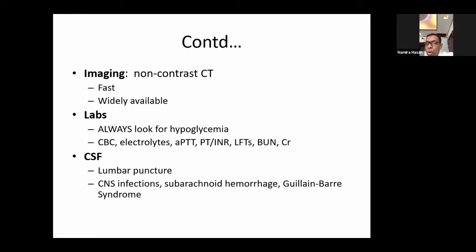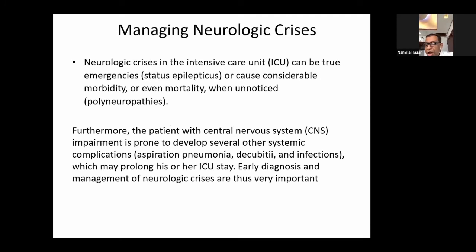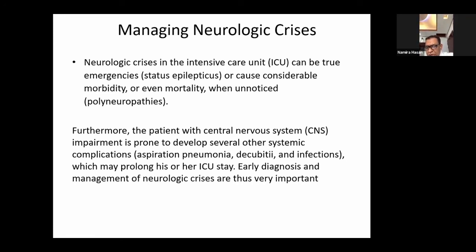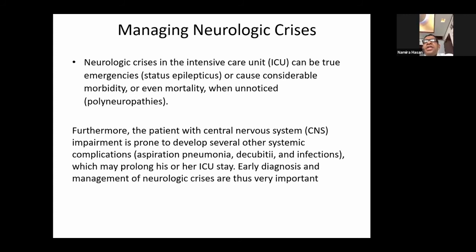Managing the neurological crisis: it should be managed in a true emergency intensive care unit setting, particularly in case of status epilepticus and myasthenic crisis. Stroke and subarachnoid hemorrhage must be managed in a stroke unit. Be very cautious regarding complications — particularly in stroke and subarachnoid hemorrhage, there is altered level of consciousness, so the patient may develop aspiration pneumonia or other infections. Early diagnosis and early management are essential.